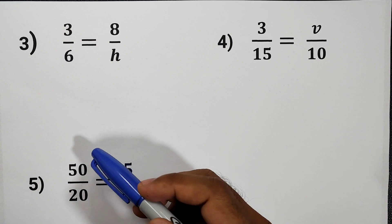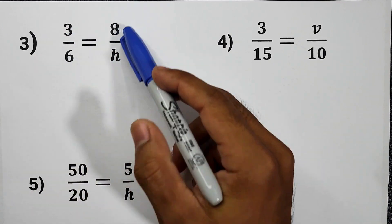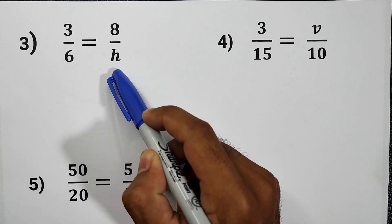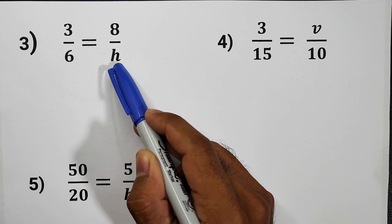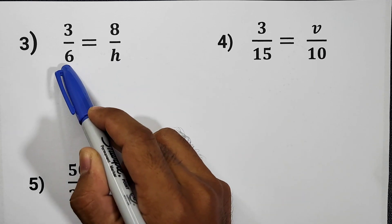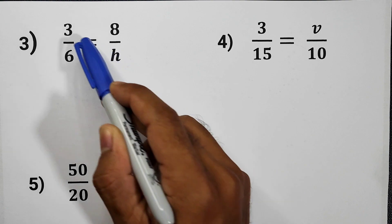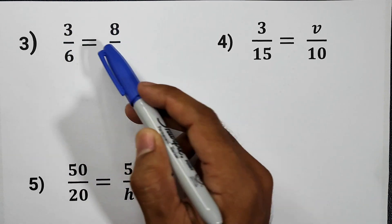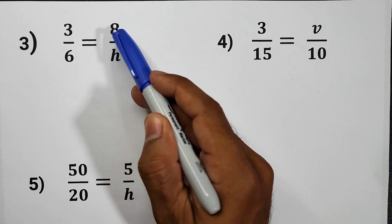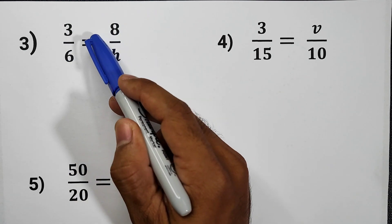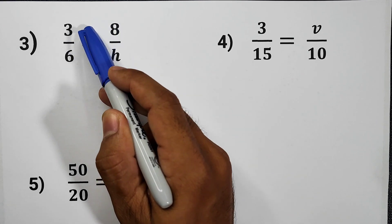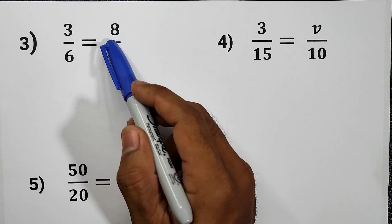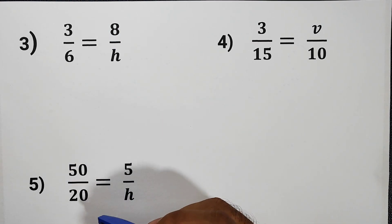Let us have item number 3. 3 over 6 is equal to 8 over H. So now, the unknown is H. The relationship of 6 to H and then the relationship of 3 to 8, we cannot easily find the relationship of 3 to 8 since we do not know what number you can multiply or divide to 3 to make it 8. That's why we have to use the other method, the cross multiplication.